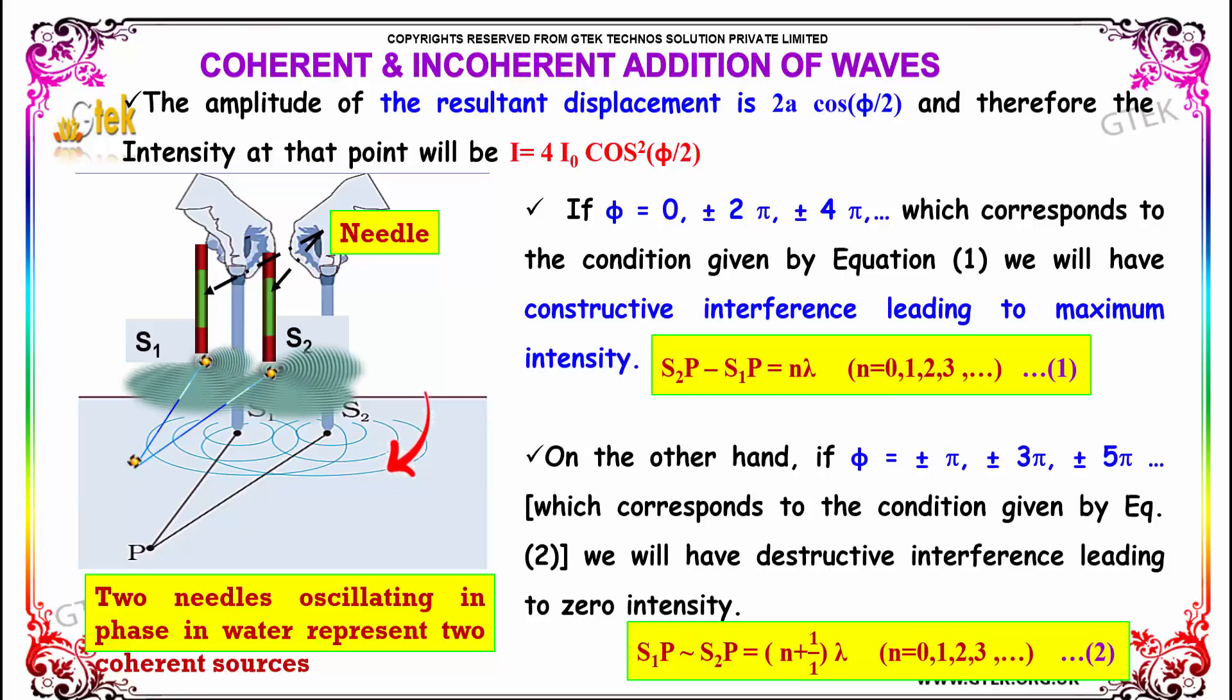The amplitude of the resultant displacement is 2a cos(φ/2), and therefore the intensity at that point will be I = 4I₀ cos²(φ/2).